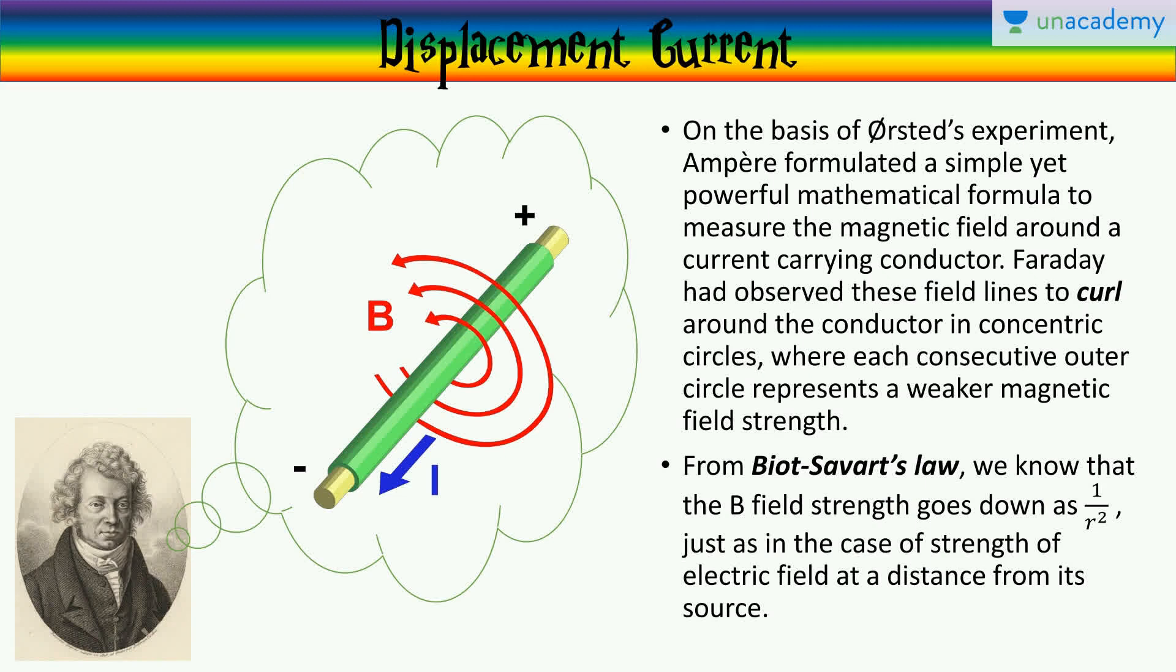On the basis of Orsted's experiment, Ampere, in France, formulated a simple yet powerful mathematical formula to measure the magnetic field around a current carrying conductor. Meanwhile, Michael Faraday had observed these field lines to curl around the conductor in concentric circles, as seen here. The current going in this direction, the magnetic field goes anticlockwise. The current is coming out of the paper, where each consecutive outer circle represents a weaker magnetic field strength.